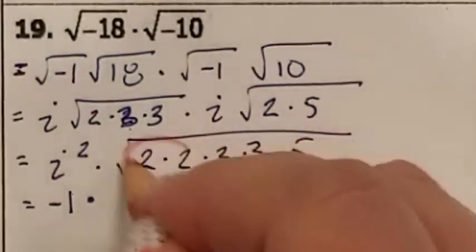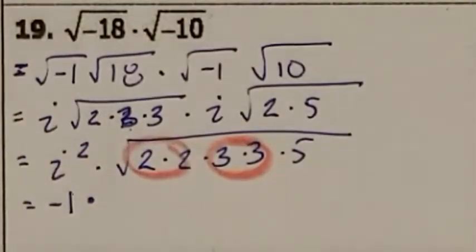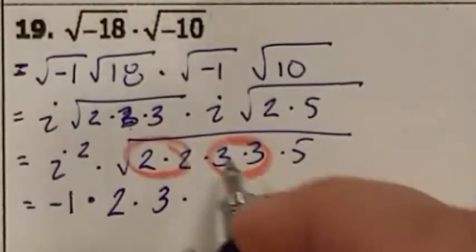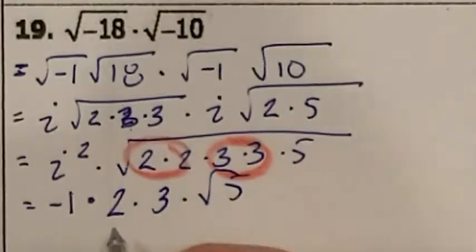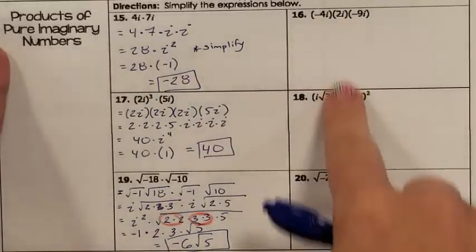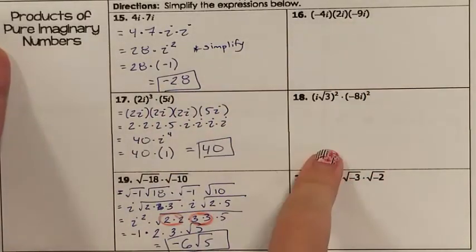looking at our square root, if they pair, they escape. So we get a pair of 2s to escape, a pair of 3s escape, but the 5 has to stay in. So we have negative 1 times 2 times 3, which is negative 6 times the square root of 5. There are three problems left on the page. Please do these for independent practice.